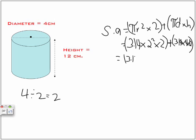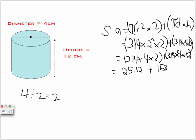Calculate this to 3.14 times 4 times 4. Then calculate to 25.12 plus 150.72. Total is 175.84.